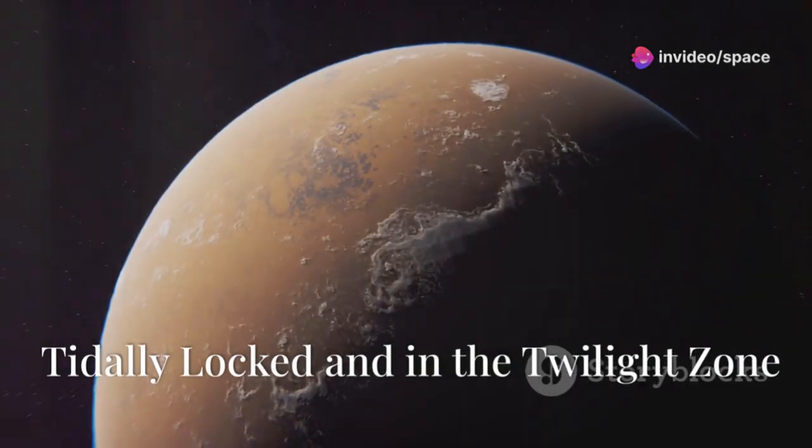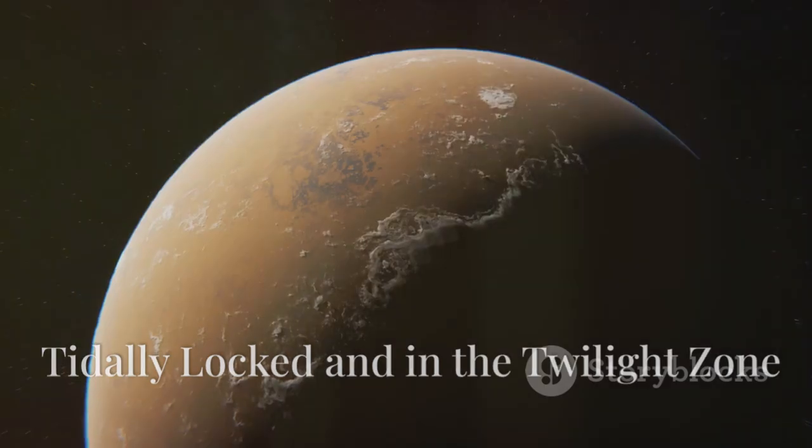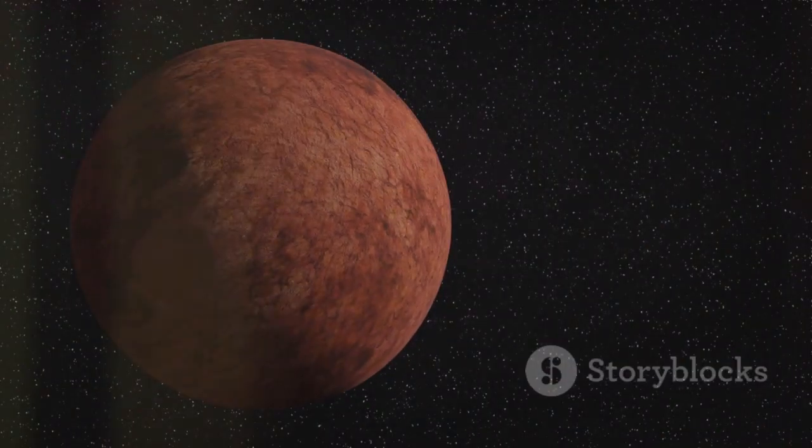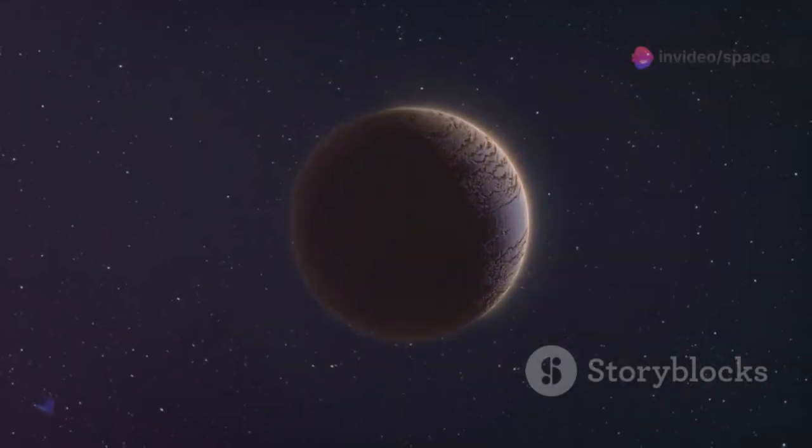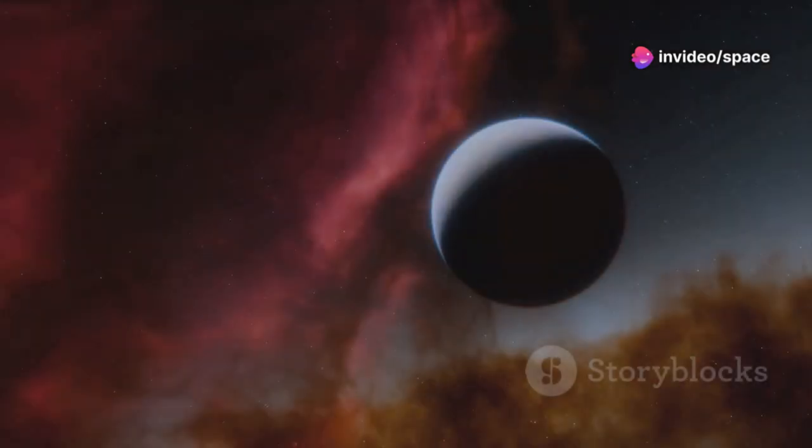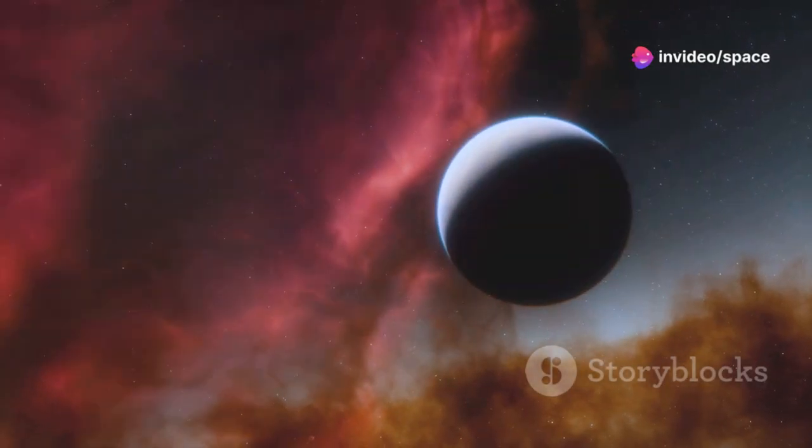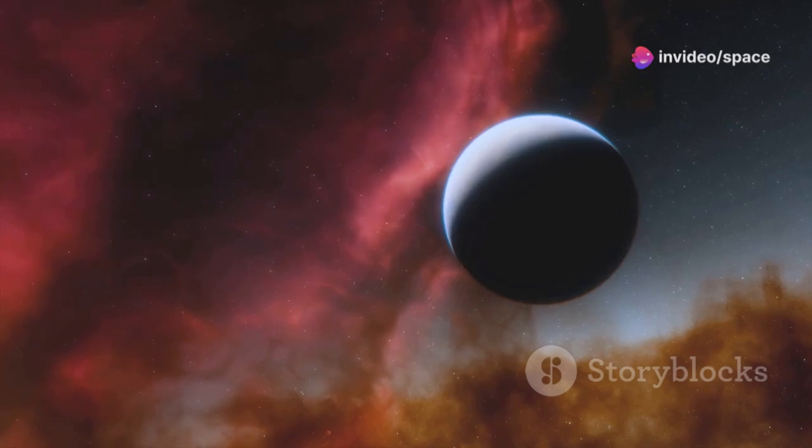Proxima b is a world that is tidally locked. One hemisphere is always facing its star, basking in eternal daylight, while the other remains in constant night. Between these two extremes lies the terminator zone, a band of never-ending twilight.